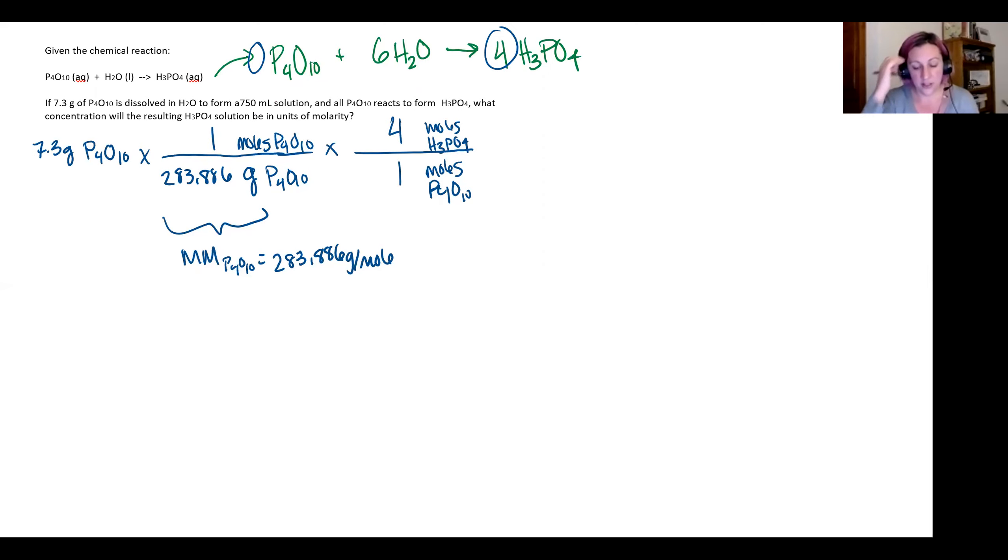So at this point, I know moles of my phosphate and I could then use molar mass to determine the grams, but I don't need the mass. So I'm going to stop here and calculate that I have 0.102858 moles of H3PO4.